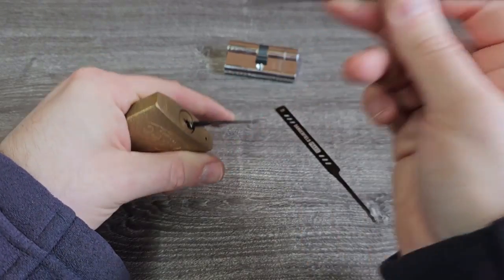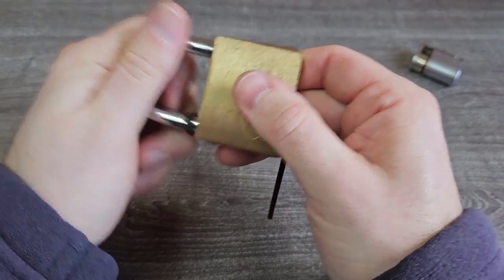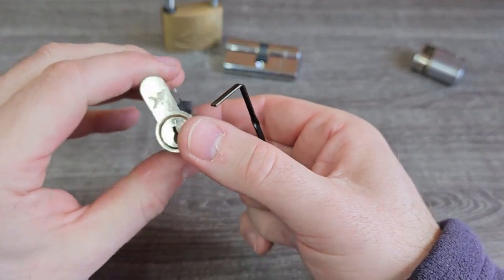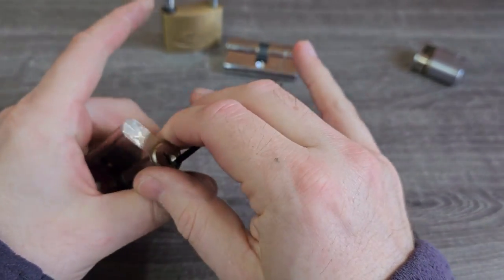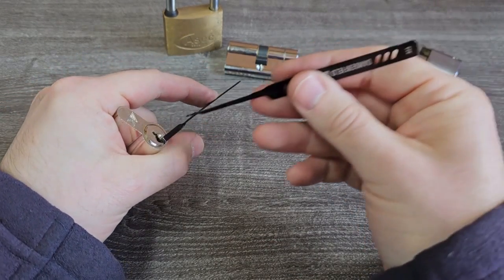And then you start praying. It works! There you go, the ASEC is open. Oh I know - Scandinavian! That's what those oval cylinders are called. Someone in the chat tell me why they're called Scandinavian.